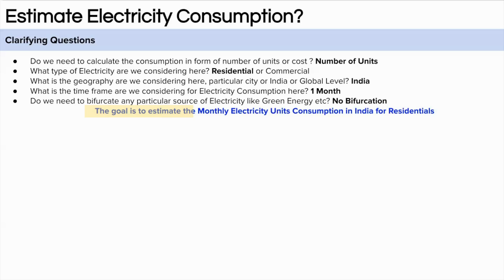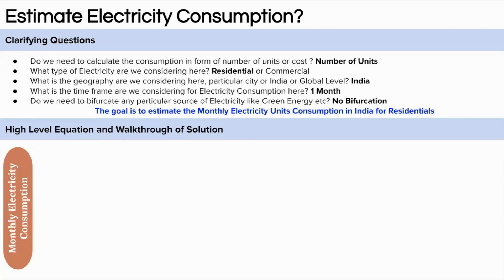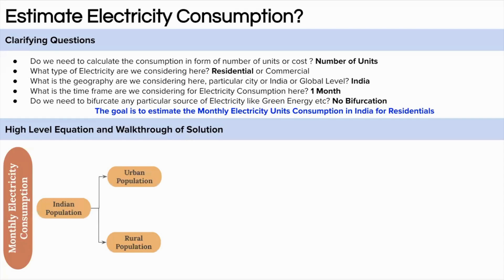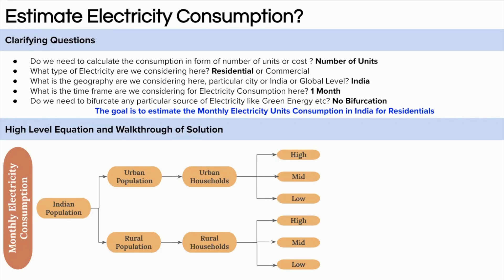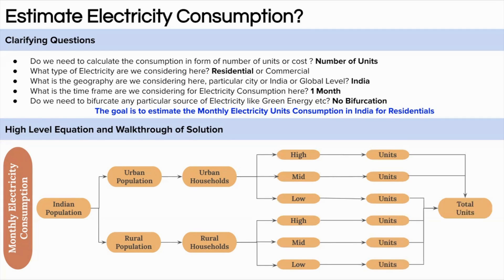Now it is time to form the goal of the problem. The goal is to estimate the monthly units consumption of electricity in India. We will start with the Indian population, bifurcate it into urban and rural population, then derive urban and rural households since consumption happens at the household level. We will then bifurcate households into upper class, middle class, and lower class, as electricity consumption differs significantly among these groups. Finally, we sum up the monthly units consumed across all classes to get the total.